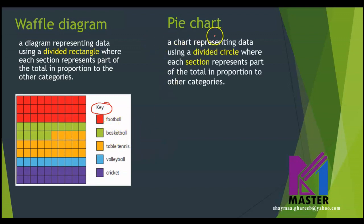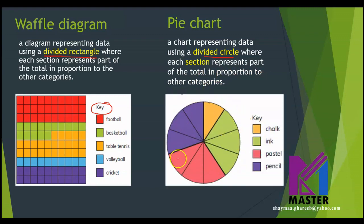Now, let's talk about the pie chart. The pie chart is a chart representing data using a divided circle — so in the waffle diagram it's a divided rectangle, and in the pie chart it's a divided circle — where each section represents part of the total in proportion to other categories. This is how the pie chart looks. It has a center, and remember that all the parts should start from the center. It also has a key to show us which color represents which type of data or information.